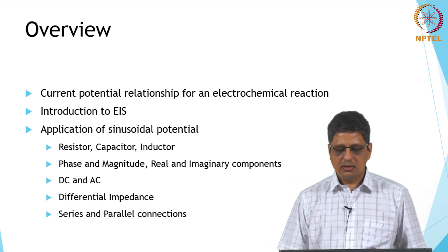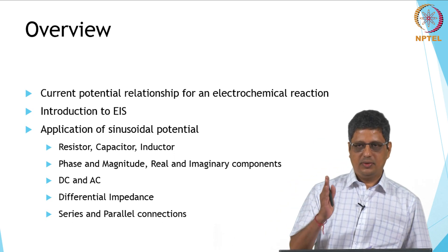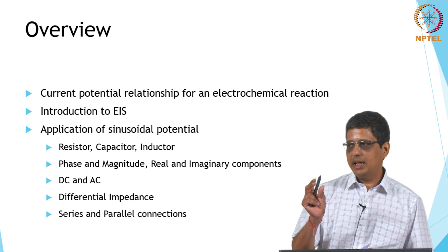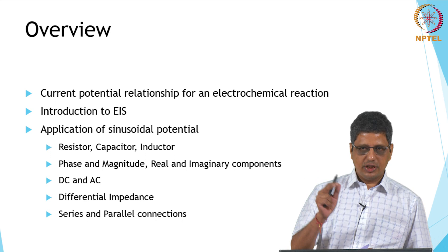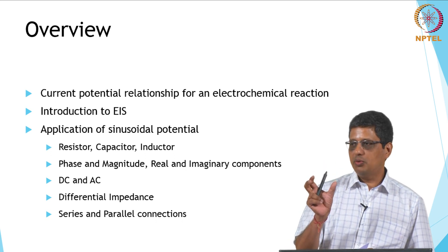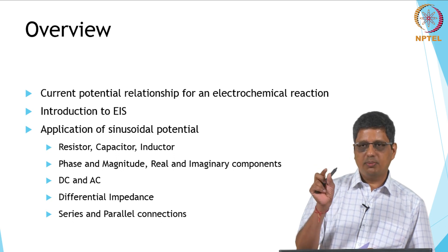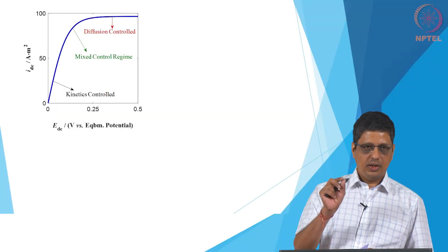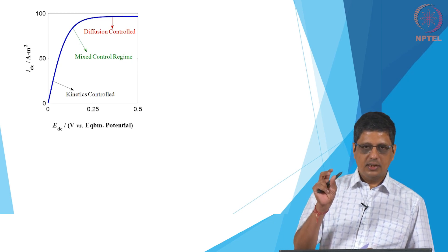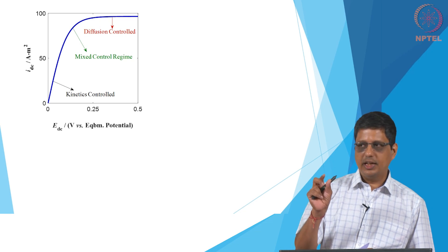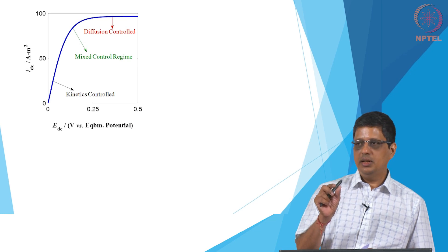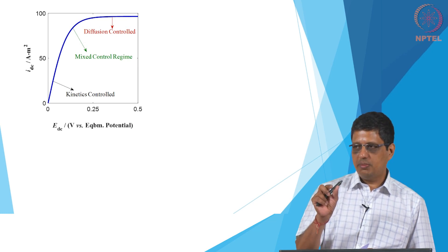What we saw in the previous class was that we have an electrode-electrolyte interface. When you have a metal immersed in solution, it forms what is called a double layer and you have a potential drop across the double layer. When you want to measure the potential, you can measure it only across two electrodes. You cannot measure the potential drop across a single electrode. Whenever we want to control the potential, we want to make sure that the changes in the potential occur at the working electrode, and the second electrode has to be one where the potential drop does not change.